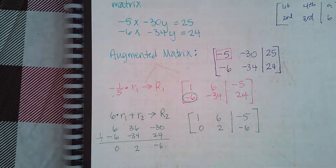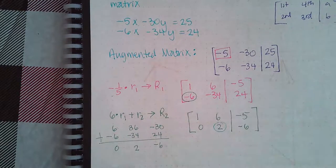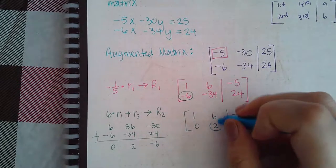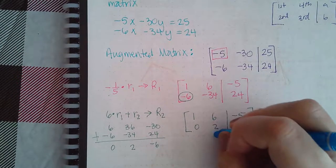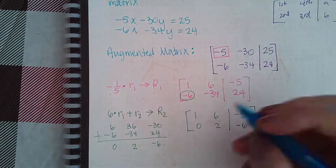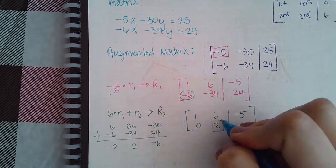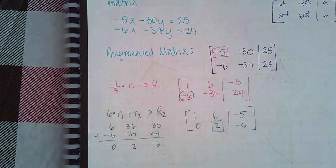Then, the third thing I need to worry about is I need to worry about getting this guy into a 0. I'm sorry, into a 1. I put the wrong symbol. I don't know if you noticed that, but I like to use boxes when I'm changing something to a 1, and then circles when I'm trying to change something into a 0. It just helps me remember what my goal was.